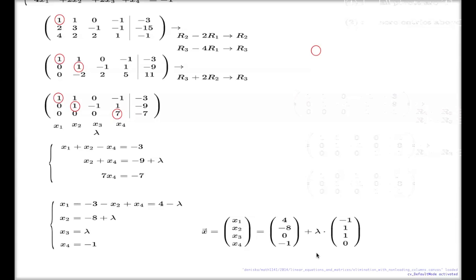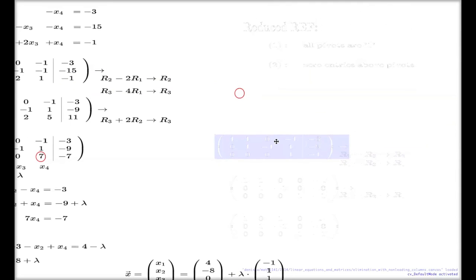It's called the reduced row echelon form. It's just a minor development of the row echelon form the way I introduced it. Before, let me just tell you this. The reduced row echelon form.